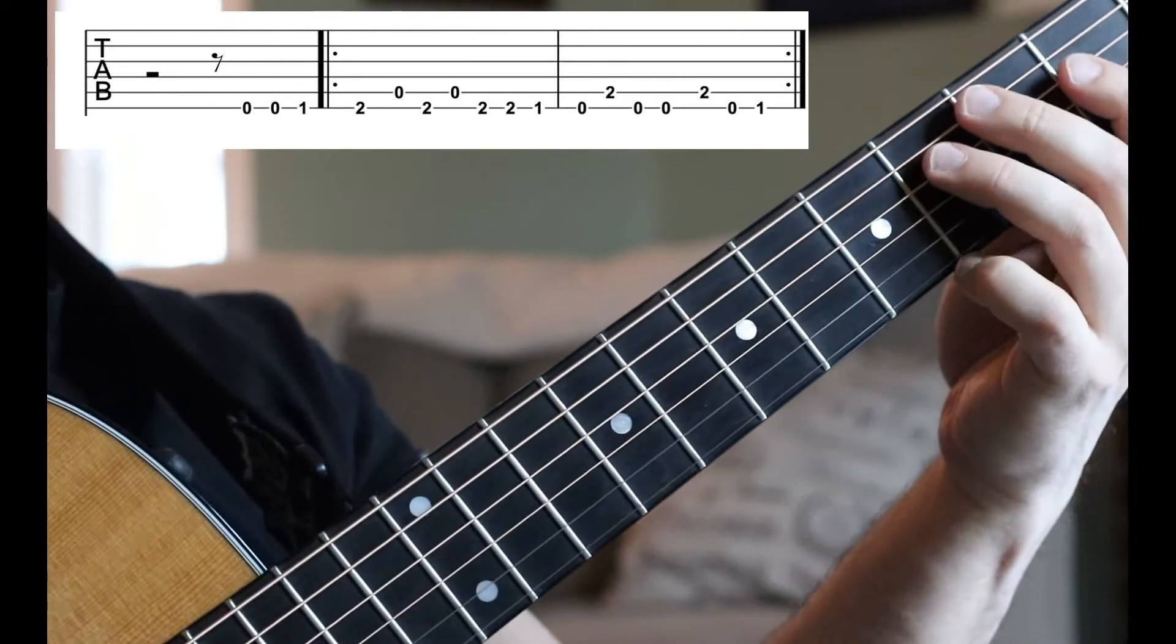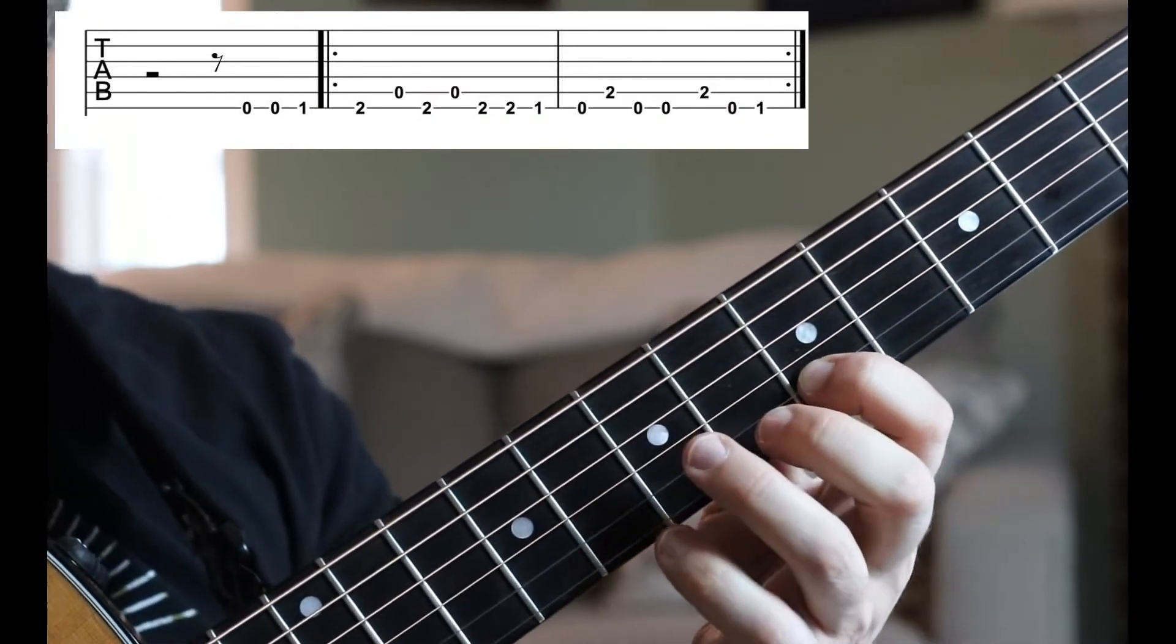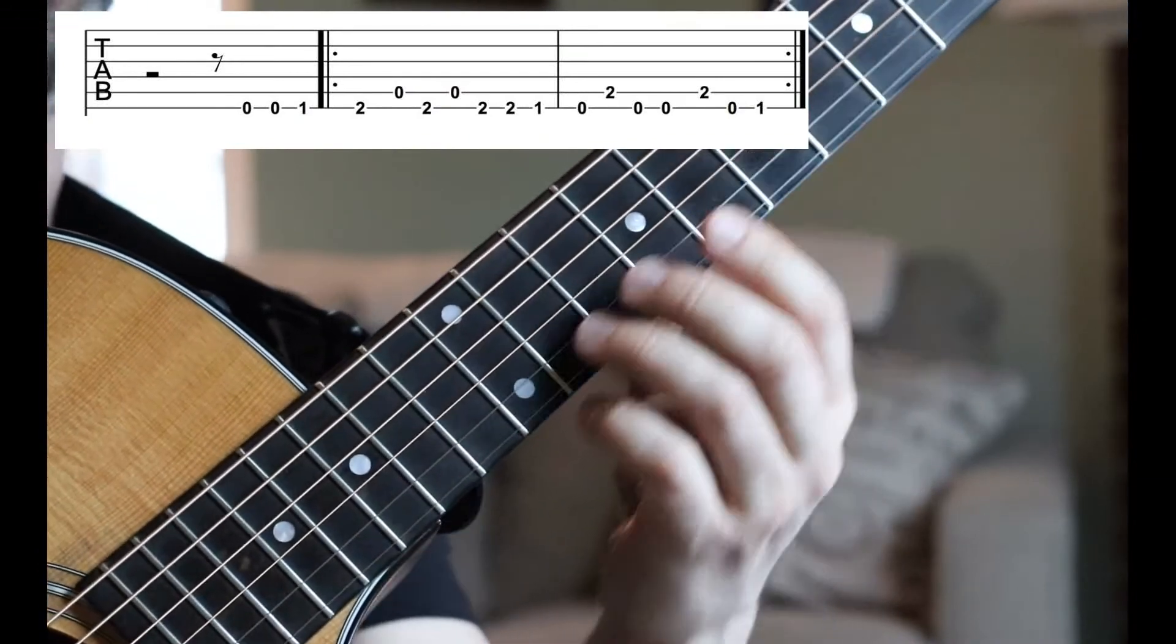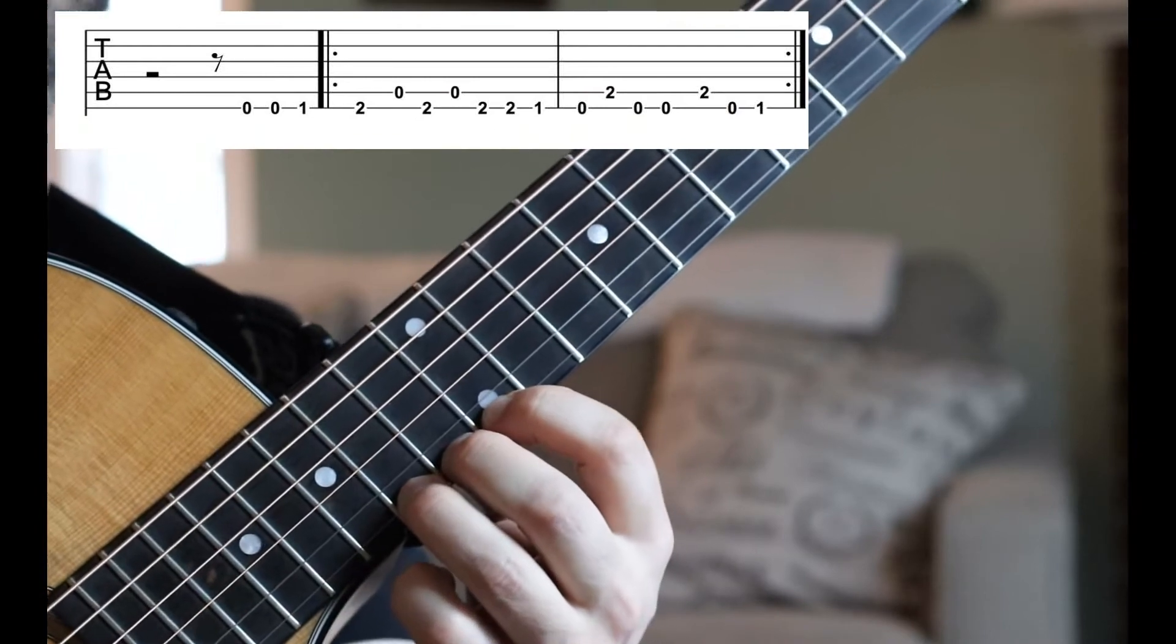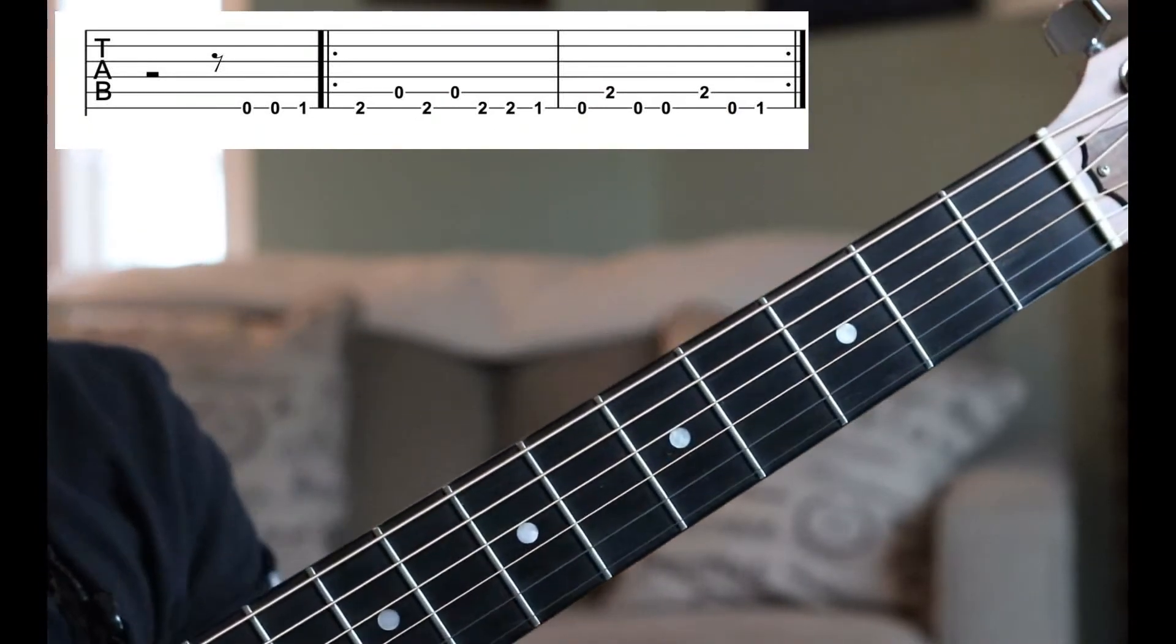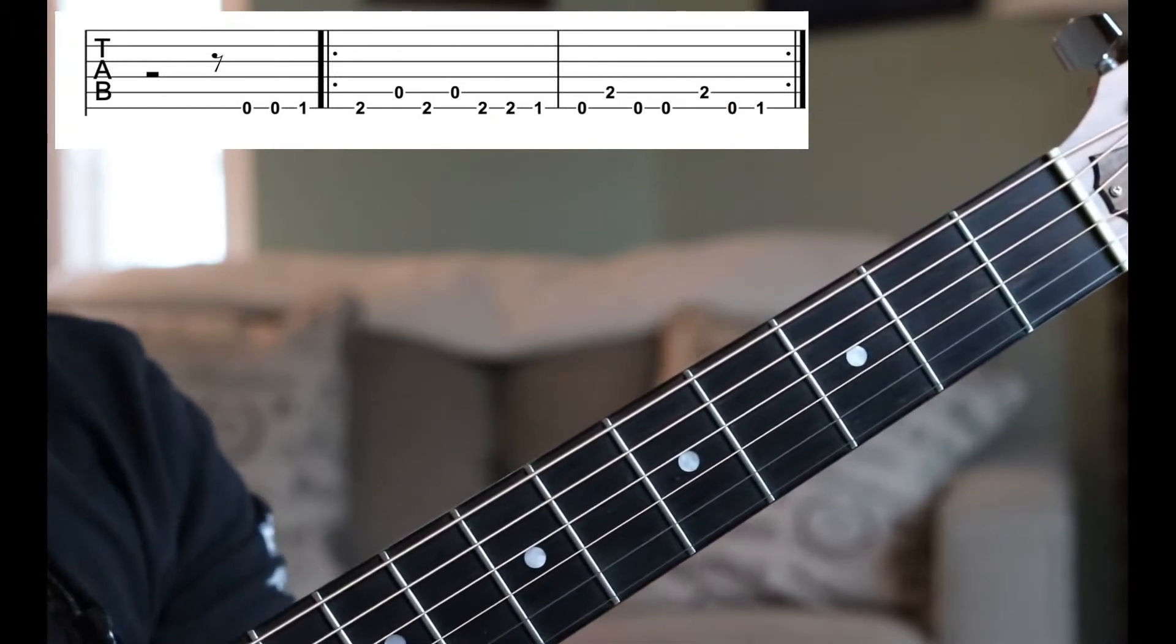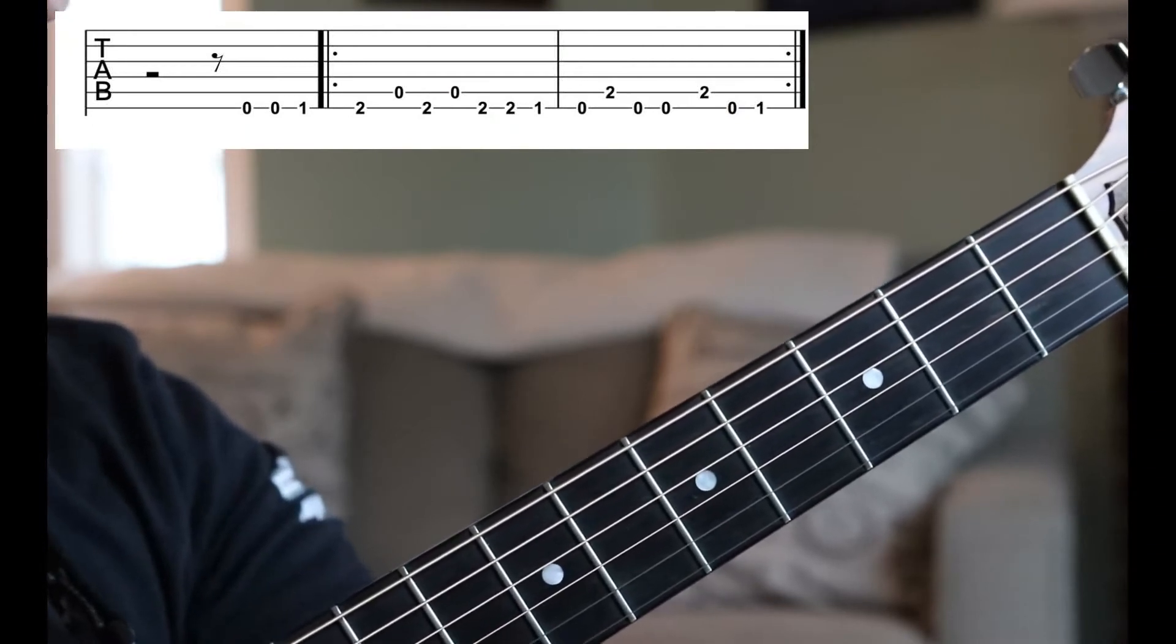Now, if you want to get even more creative, you can jump up to here, the fifth fret. And if you want to get super creative, come on up to twelve. But that one's pretty tricky. If you want, you can also use some open strings. Now, moving on. So, that's that great riff from Nirvana's Come As You Are.